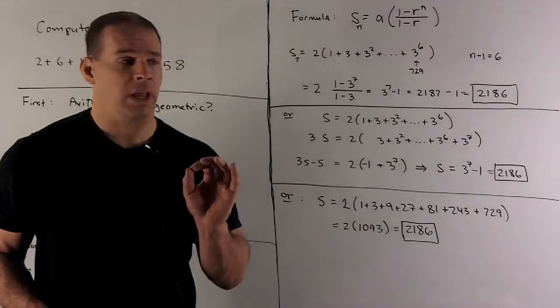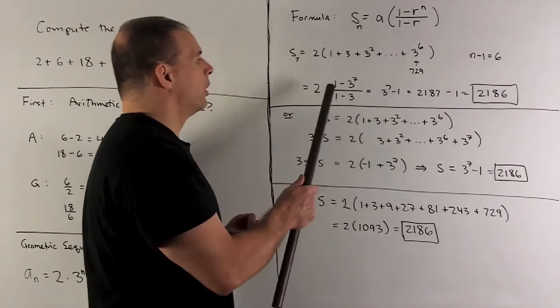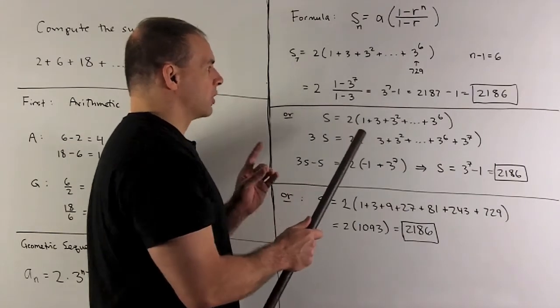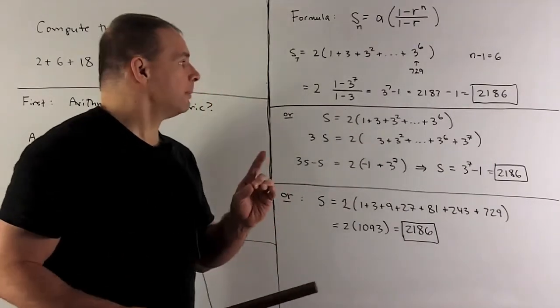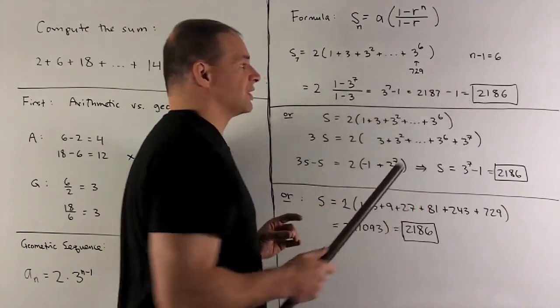We go to the formula. I put my numbers in. So I'll have 2, our first term, 1 minus 3 to the 7th, 1 minus 3. That's going to give me 3 to the 7th minus 1. And then that becomes 2187 minus 1 or 2186.